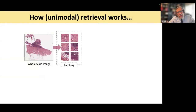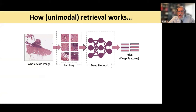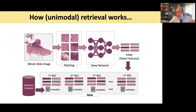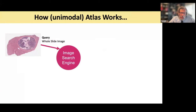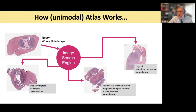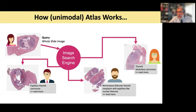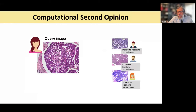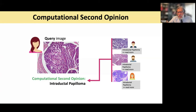Once you patch the whole-slide image and send it to some network to get features, you add metadata and start matching and searching. When you send a query whole-slide image to an image search engine, you retrieve similar ones and retrieve associated metadata. Here LLMs and foundation models can help. The retrieved cases come from other pathologists who are not present — this is a sort of virtual peer review that enables computational second opinion and consensus building, which is extremely valuable in medicine.